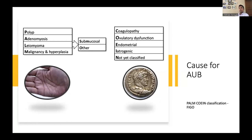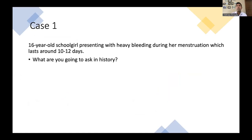Iatrogenic causes include contraceptive devices — IUCD, Jadelle, or DMPA-related bleeding. Once you take your menstrual history, you should be able to narrow down your differential based on this classification. You don't need to consider all differentials — you can narrow them down. Based on case discussions, we will try to narrow down the differential diagnosis.